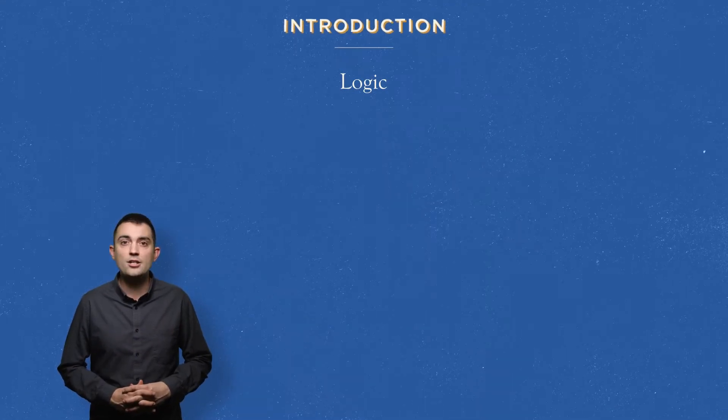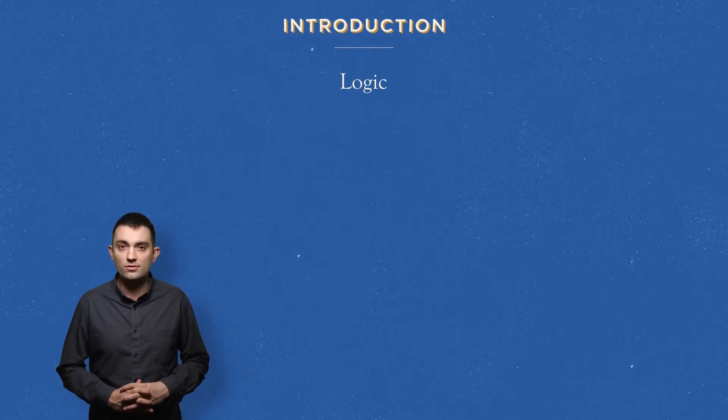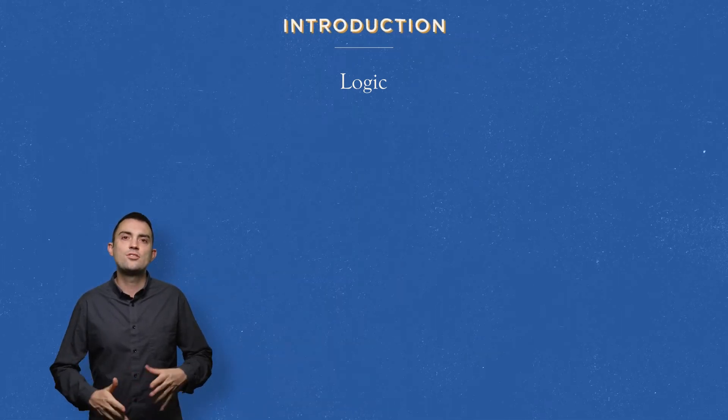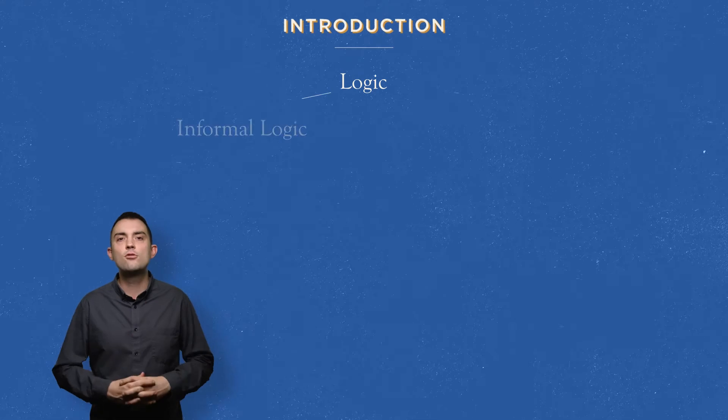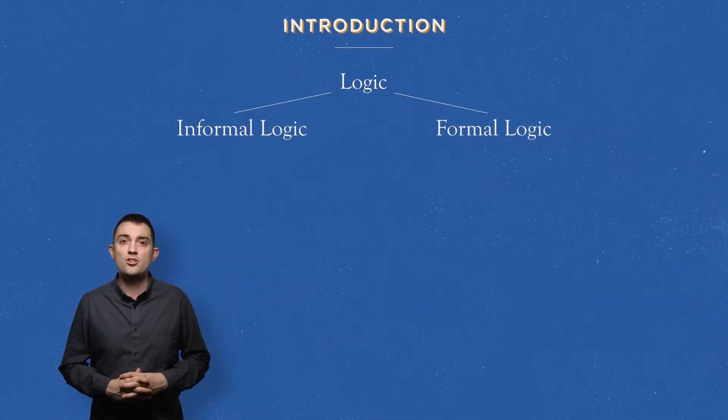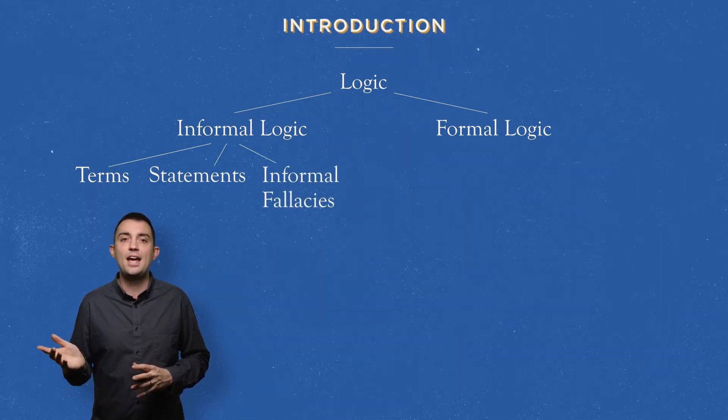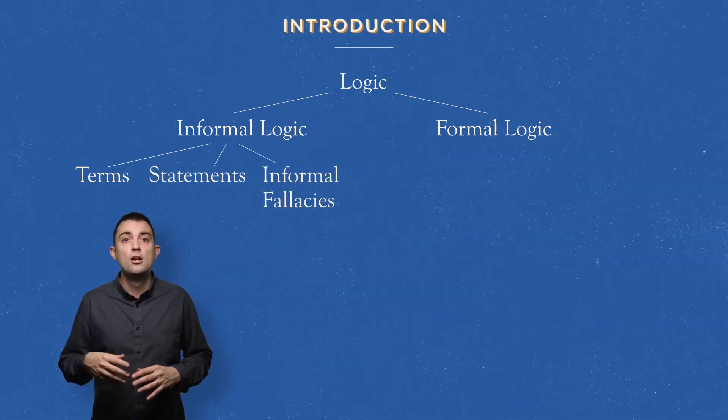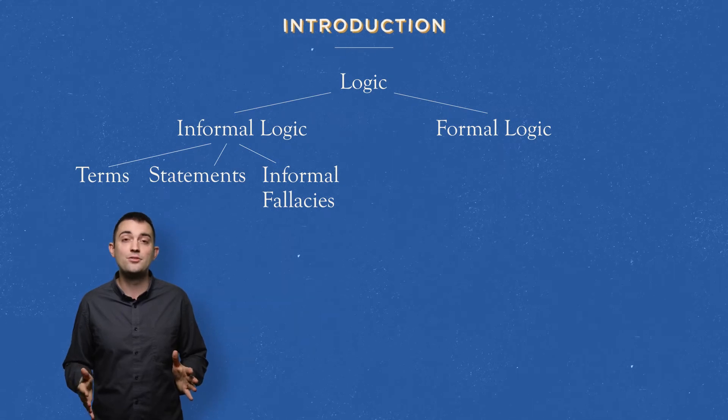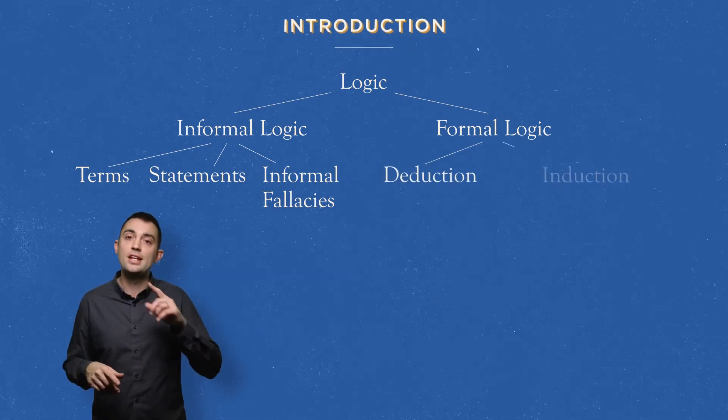Next step for this introduction, I just want to remind you again of the structure of logic. Remember that logic has two main branches: informal logic and formal logic. Informal logic does things with terms, statements, and fallacies, and we learned all about that in introductory logic. Now, formal logic also has two main branches: deduction and induction.